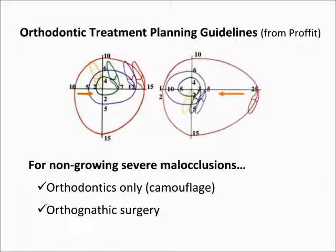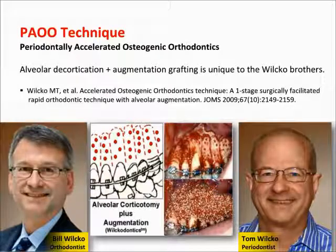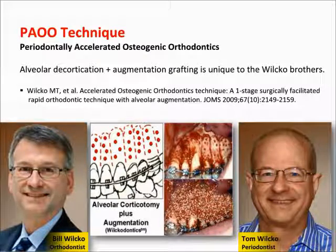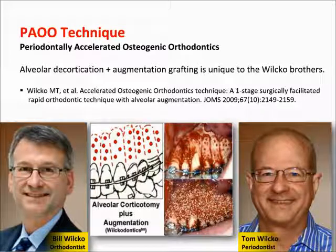The treatment options for borderline to severe malocclusion in non-growing patients are currently either camouflage orthodontics or orthognathic surgery. The purpose of the present article is to compare current beliefs about the scope of orthodontic treatment with periodontally accelerated osteogenic orthodontics, otherwise known as PAOO.